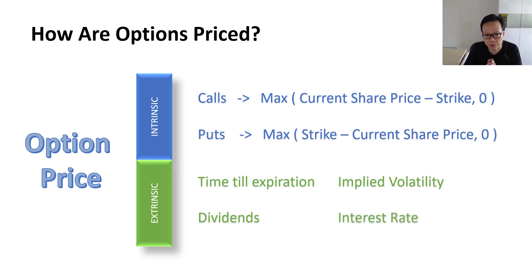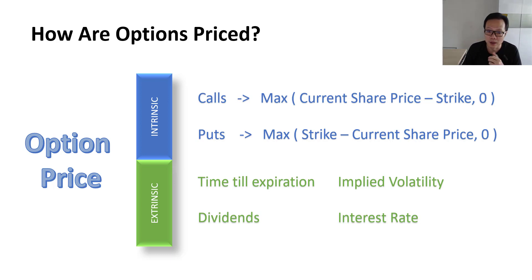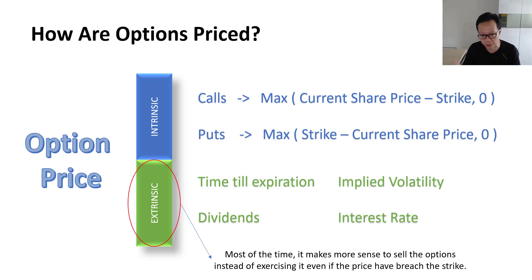The final component of extrinsic value is interest rates, which affect everything — options are not spared. As a leveraged product, options have embedded financing charges within the prices. Higher interest rates tend to increase the price of calls and lower the price of puts slightly, and vice versa. Also, because of this added extrinsic value it usually makes more sense for option buyers to sell the options directly rather than exercise them, since when you exercise you only get the intrinsic value.